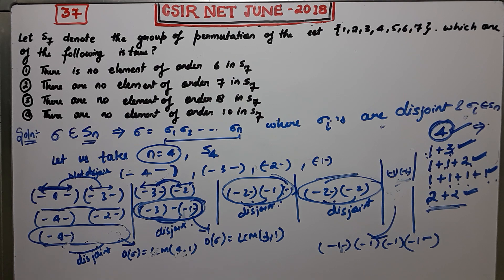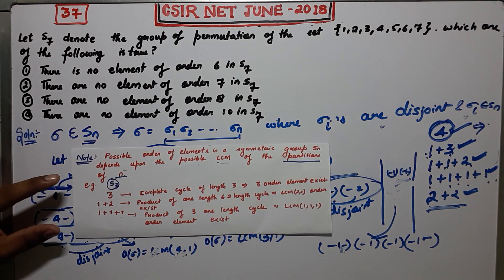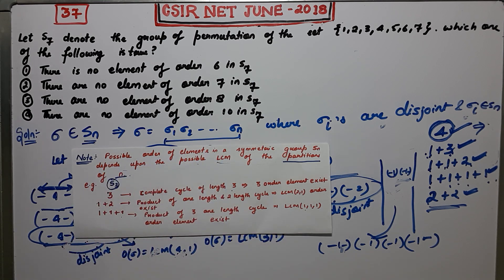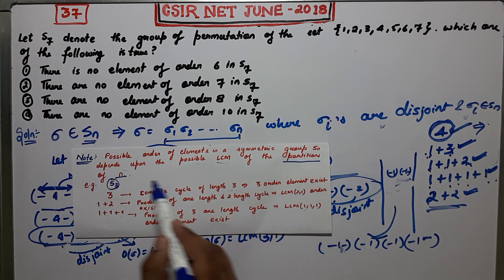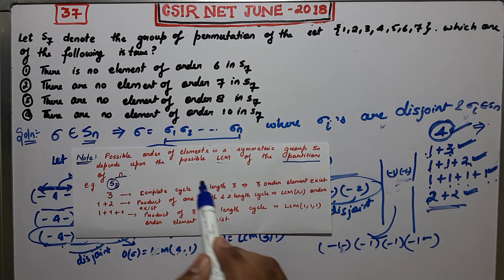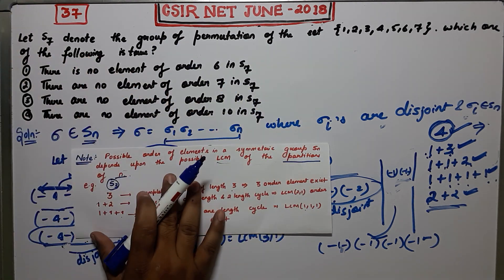This leads to the key note: the possible orders of elements in the symmetric group Sn depend upon the possible LCMs of the partitions of n. With this note, we can solve the original question very quickly.